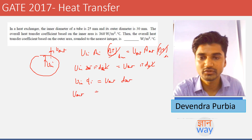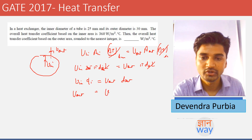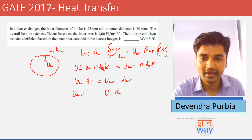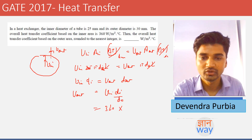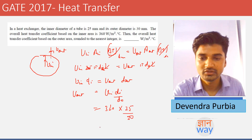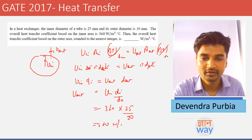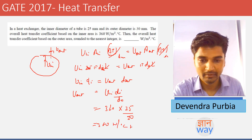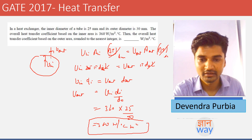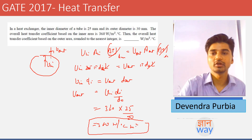From the relation U_out equals U_in·d_i divided by d_o, substituting U_in = 360, d_i = 25 mm, and d_o = 30 mm, we get U_out equals 300 W/m²·°C. This is the overall heat transfer coefficient based on the outer surface.